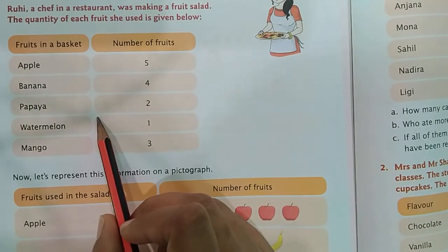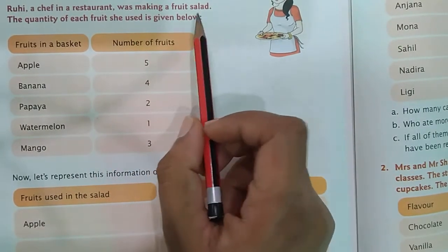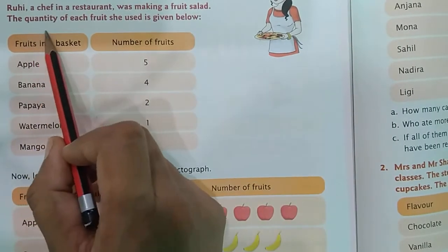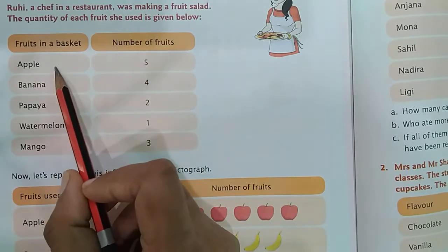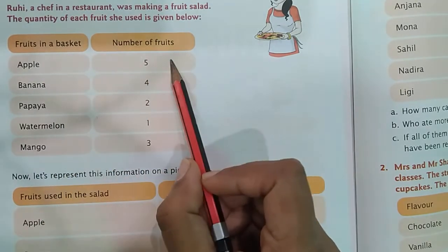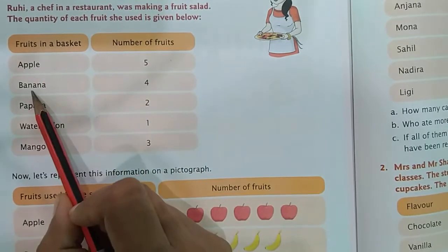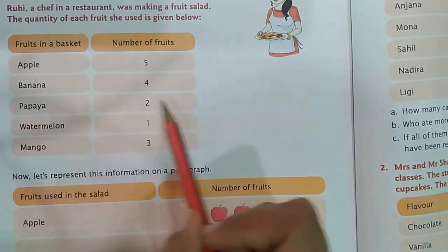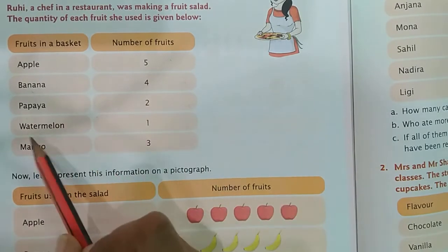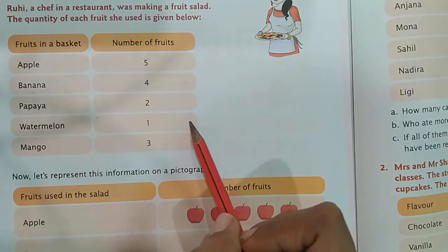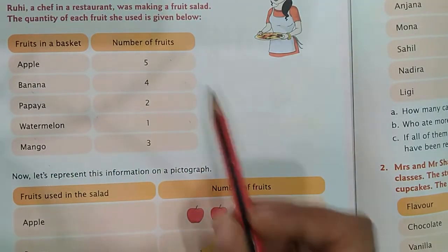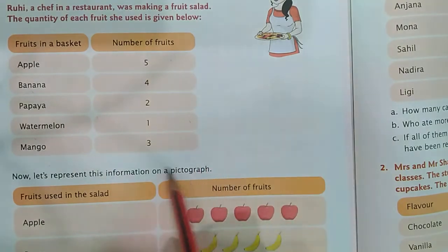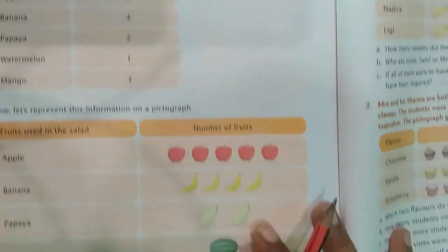So Ruhi, a chef in a restaurant, was making a fruit salad. The quantity of each fruit she used is: Apple — 5, Banana — 4, Papaya — 2, Watermelon — 1, Mango — 3. Now we have to show this data in picture form.